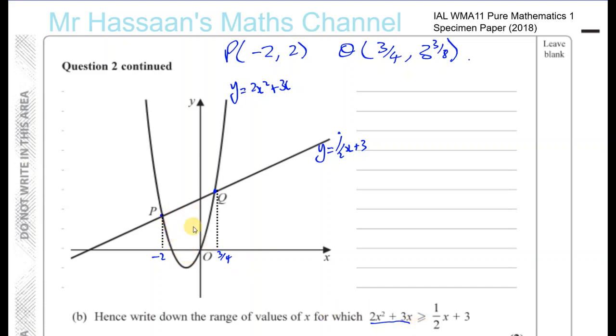And when you get to 3 quarters, when x is equal to 3 quarters, they're equal again. And when x is greater than 3 quarters, the curve you can see is above the line. If you choose a value over here, for example, you see that the curve has a higher value than the line.